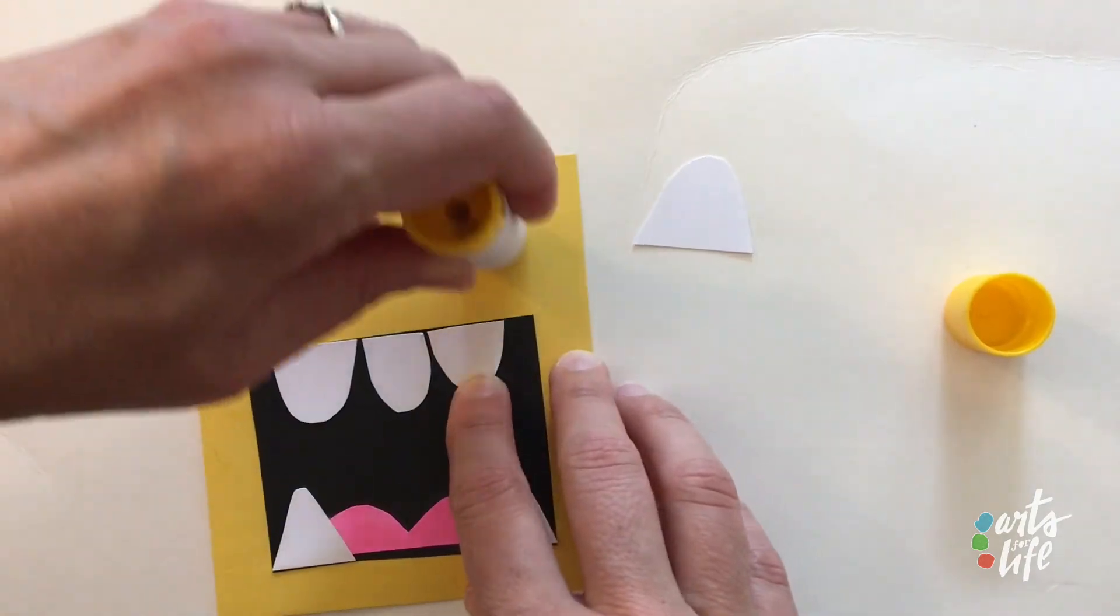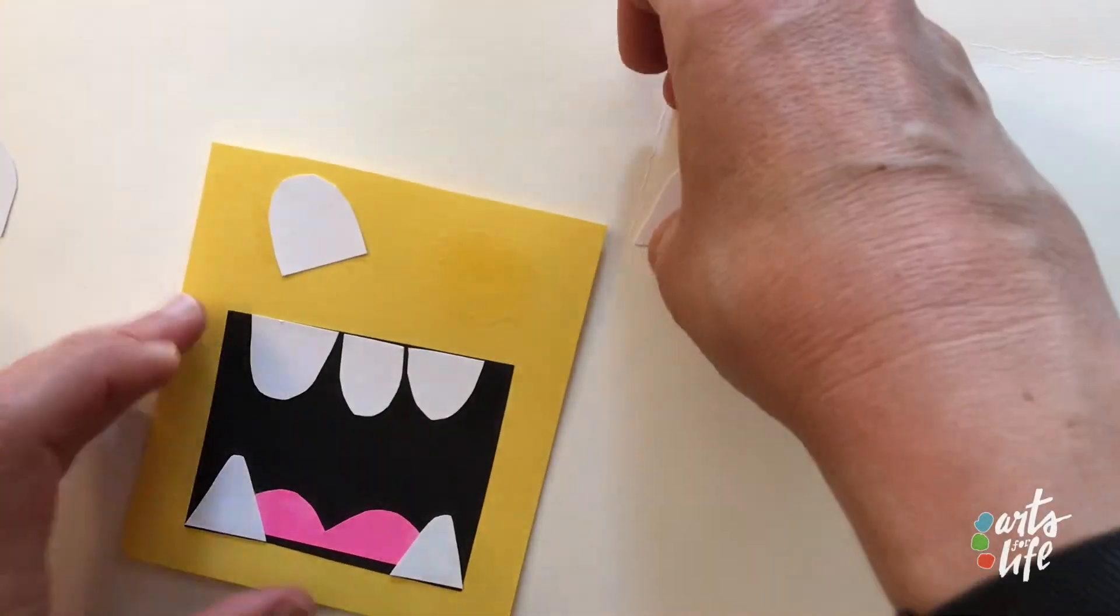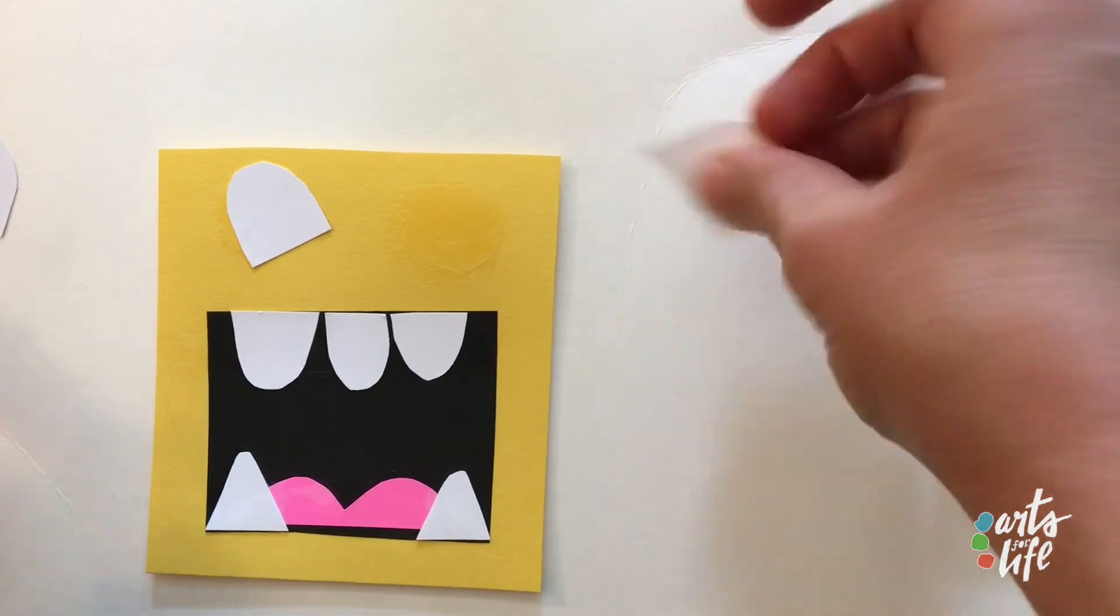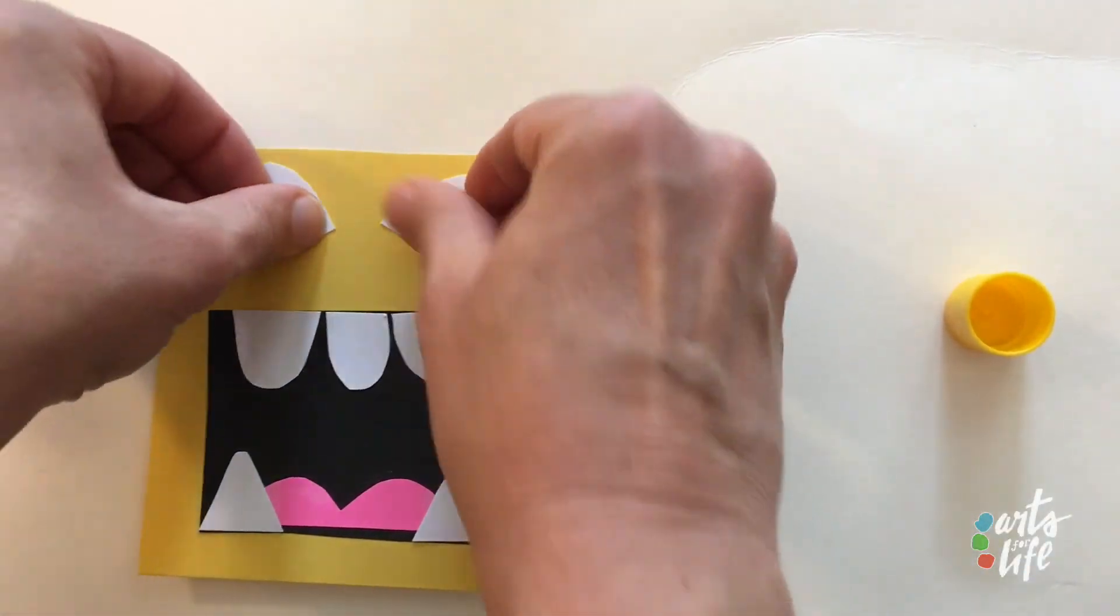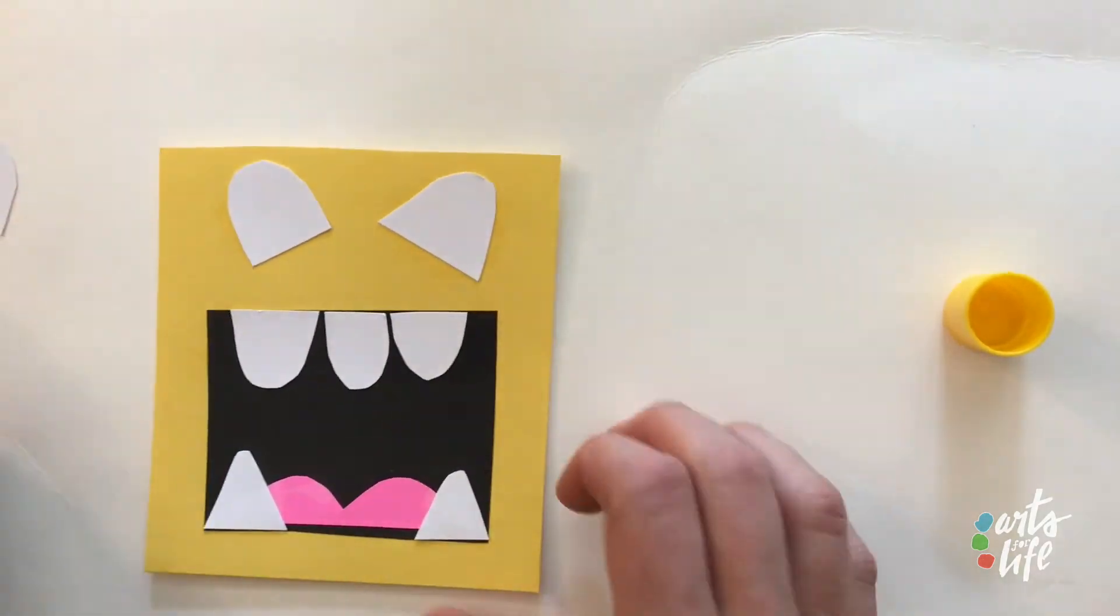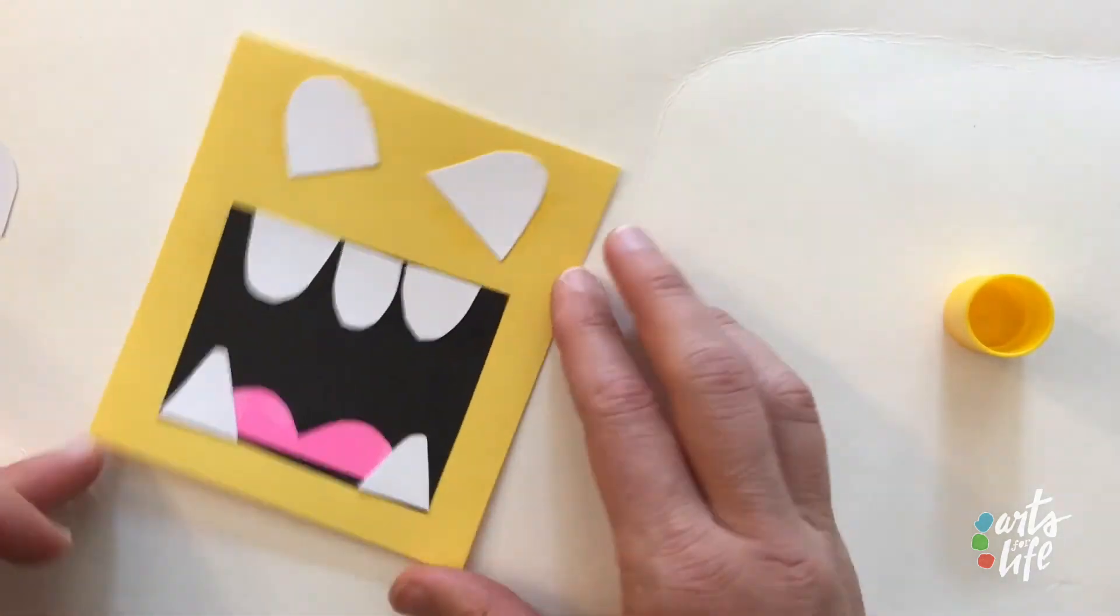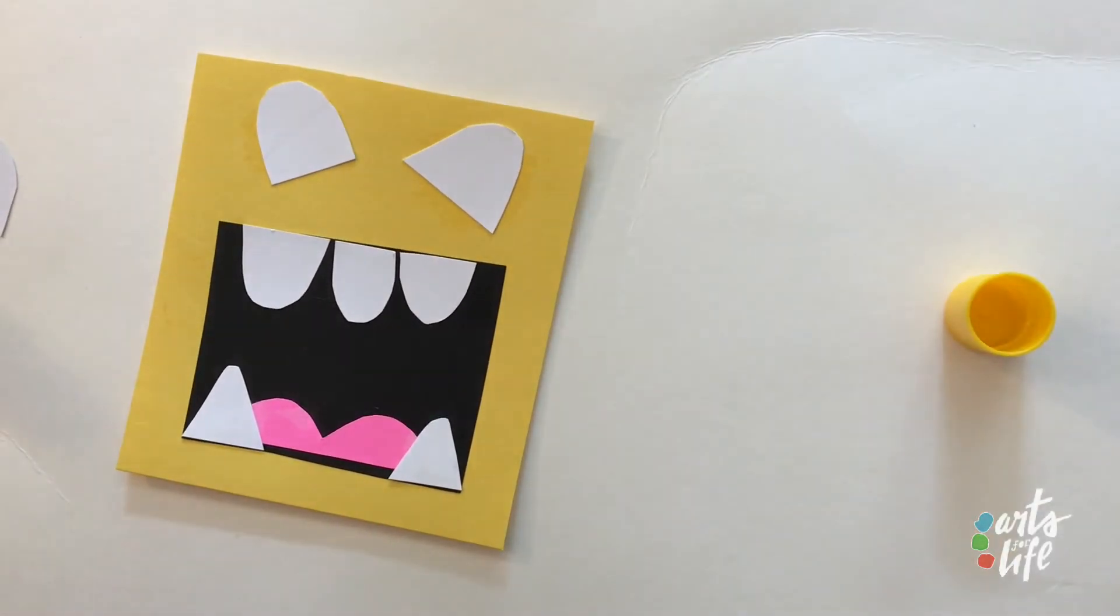You can also add features like eyelashes, eyebrows, bow ties, noses. I bet you can think of all kinds of things. My monster looks like it really wants to say something.